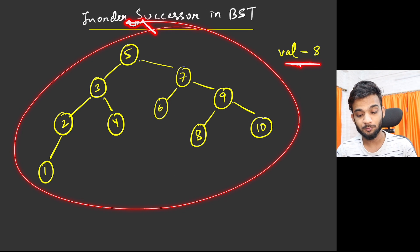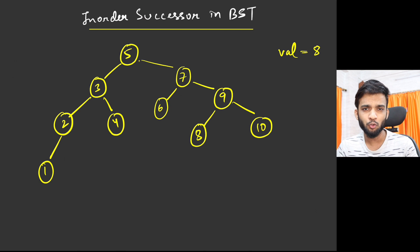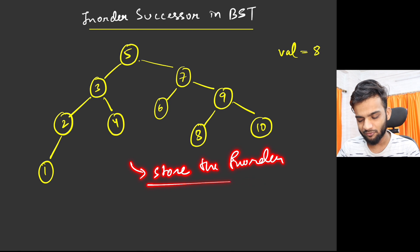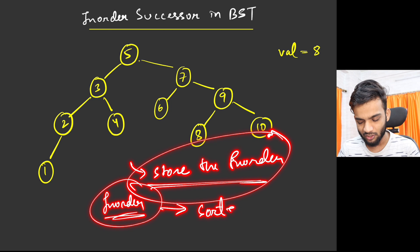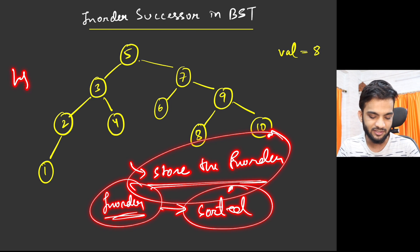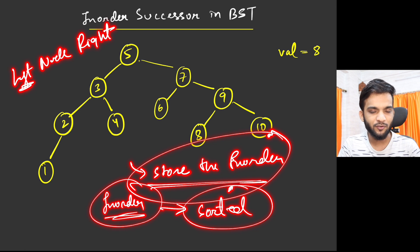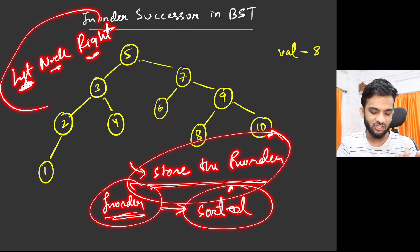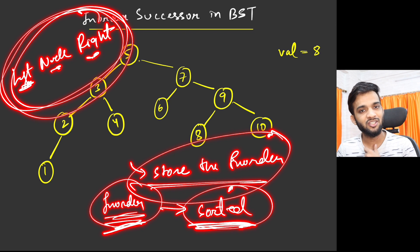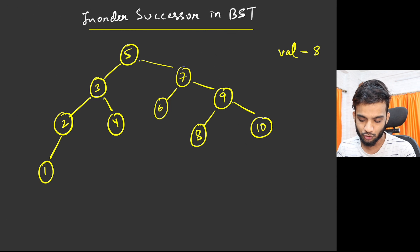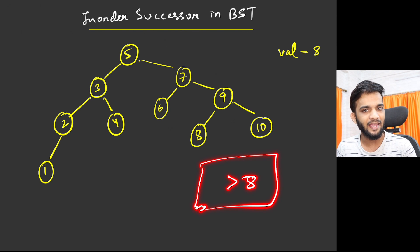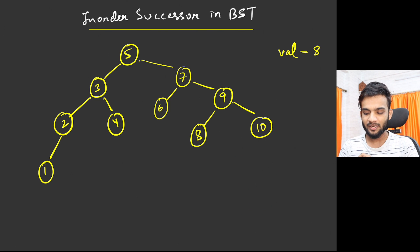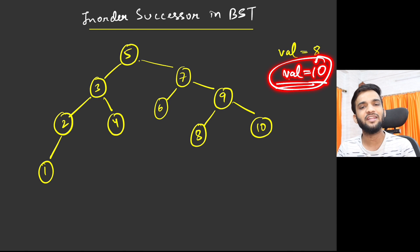You are given a value and the binary search tree, and you have to return the successor. The brute force way is straightforward — just store the in-order, then find the answer. In a BST, the in-order is always sorted because left is smaller and right is greater, giving an increasing order. You can then do a binary search or linear search to find the first value greater than 8.